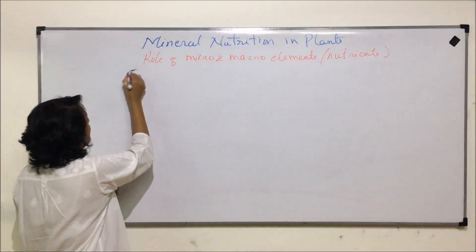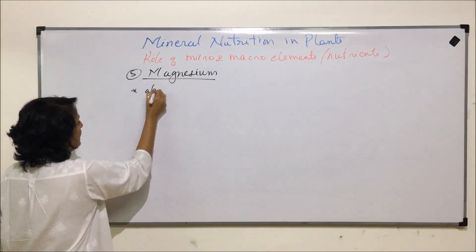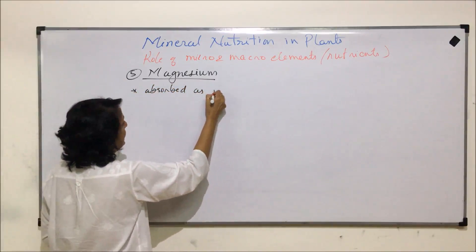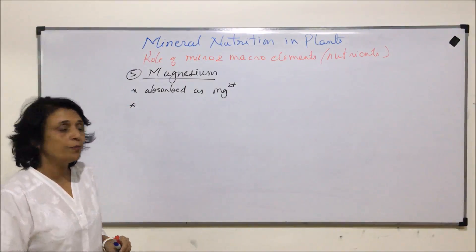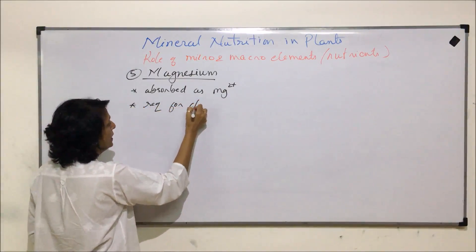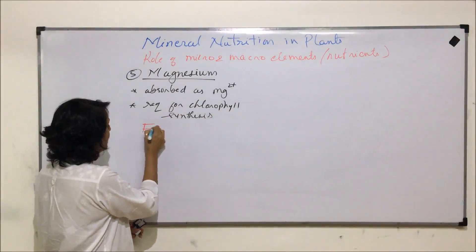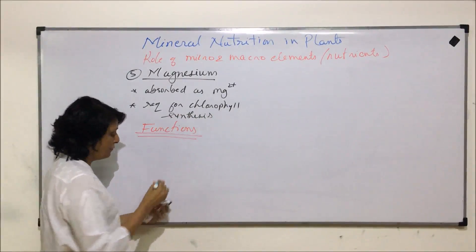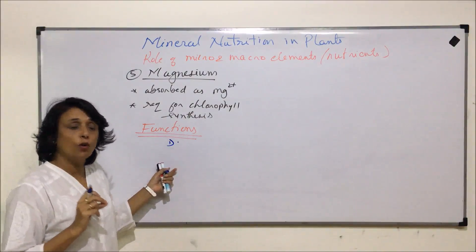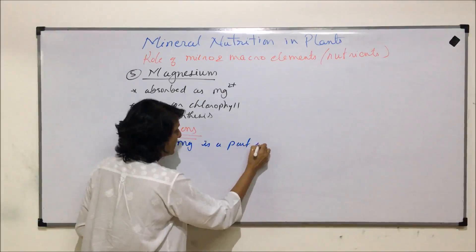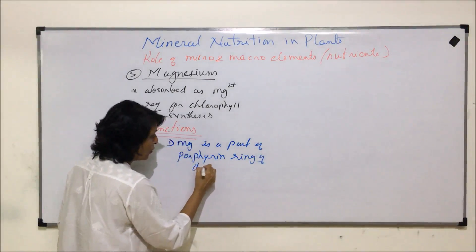The next element is magnesium. Magnesium is absorbed as divalent magnesium ions. It is required where chlorophyll is to be synthesized, so it is required for chlorophyll synthesis. The first function is that magnesium is required in the structure of the chlorophyll molecule — specifically, magnesium is a part of the porphyrin ring of the chlorophyll molecule.